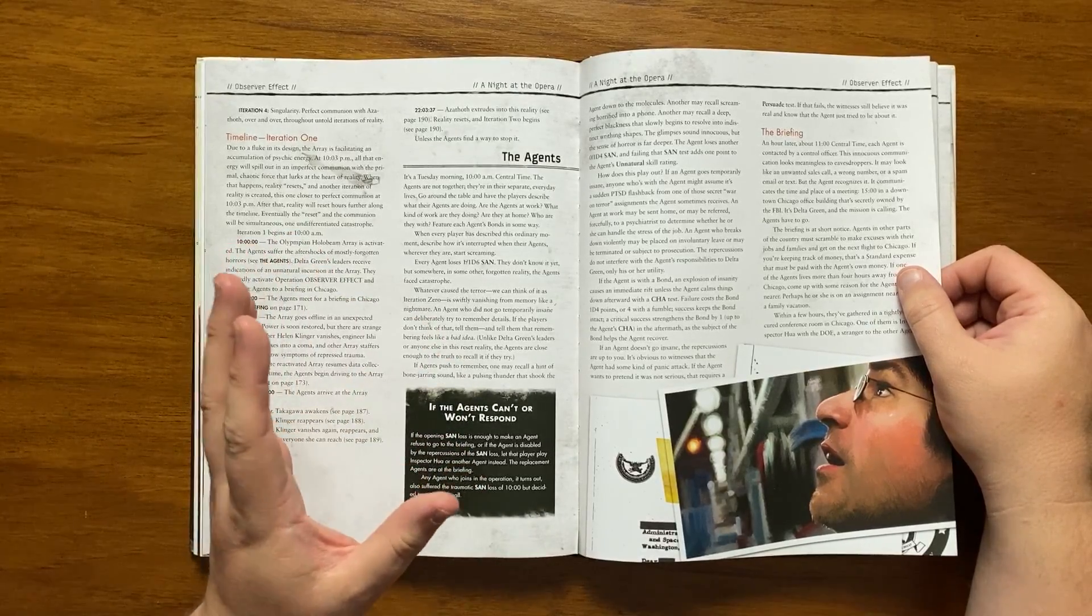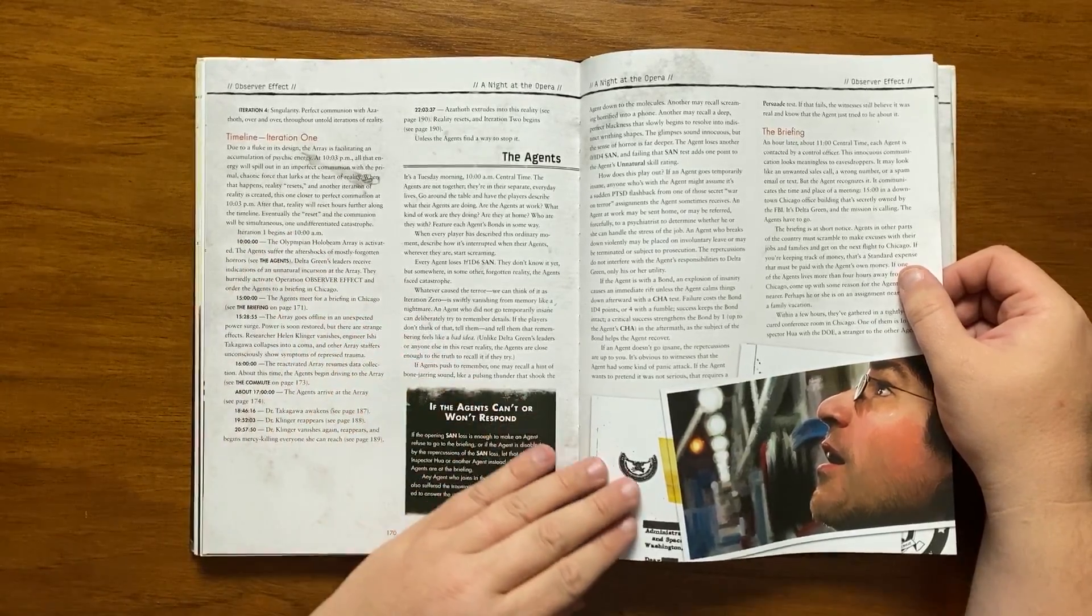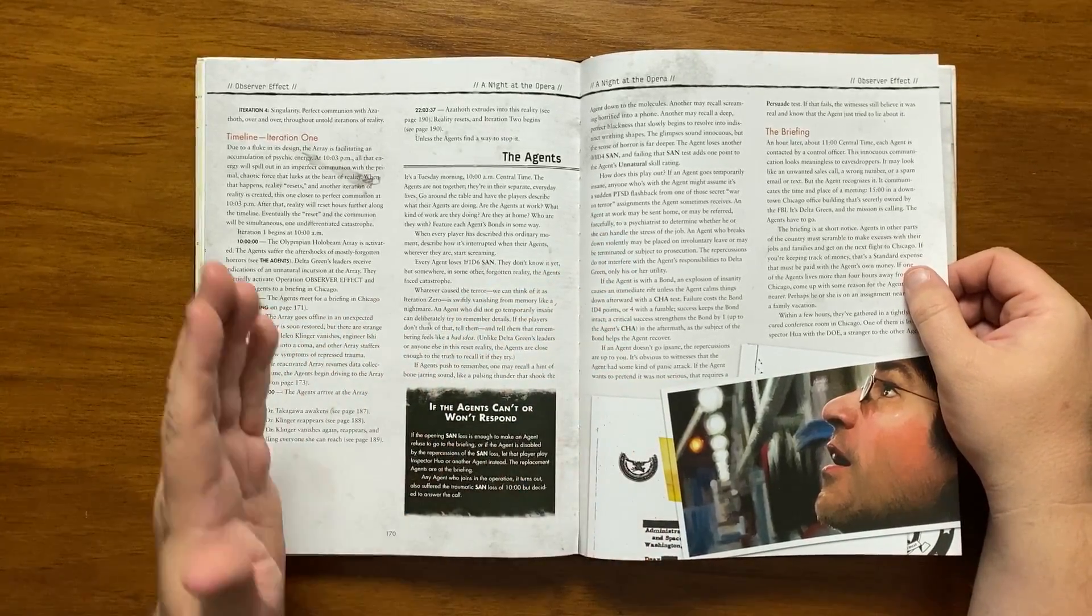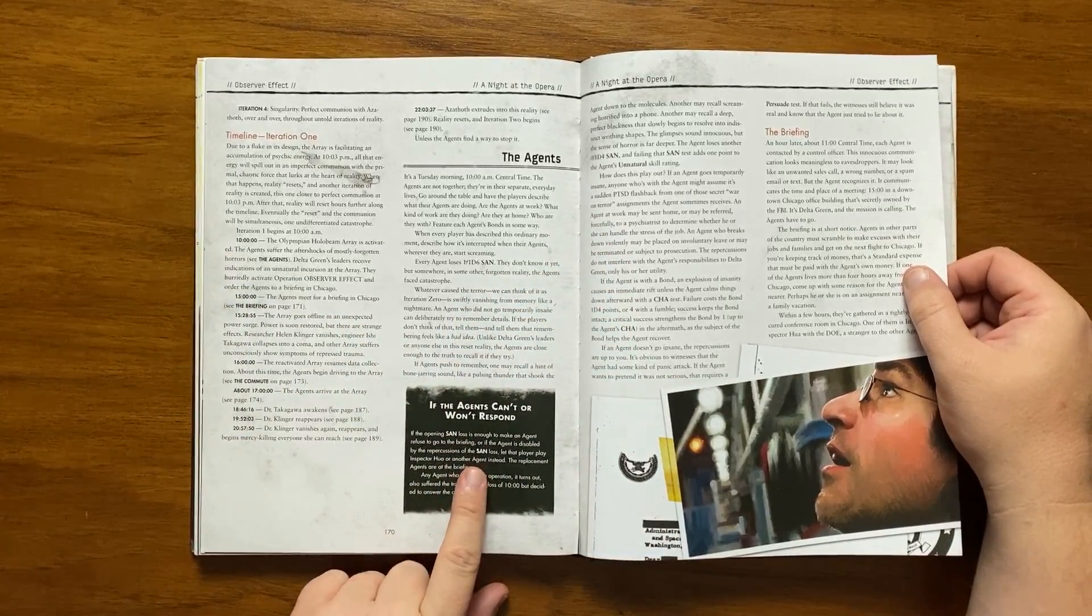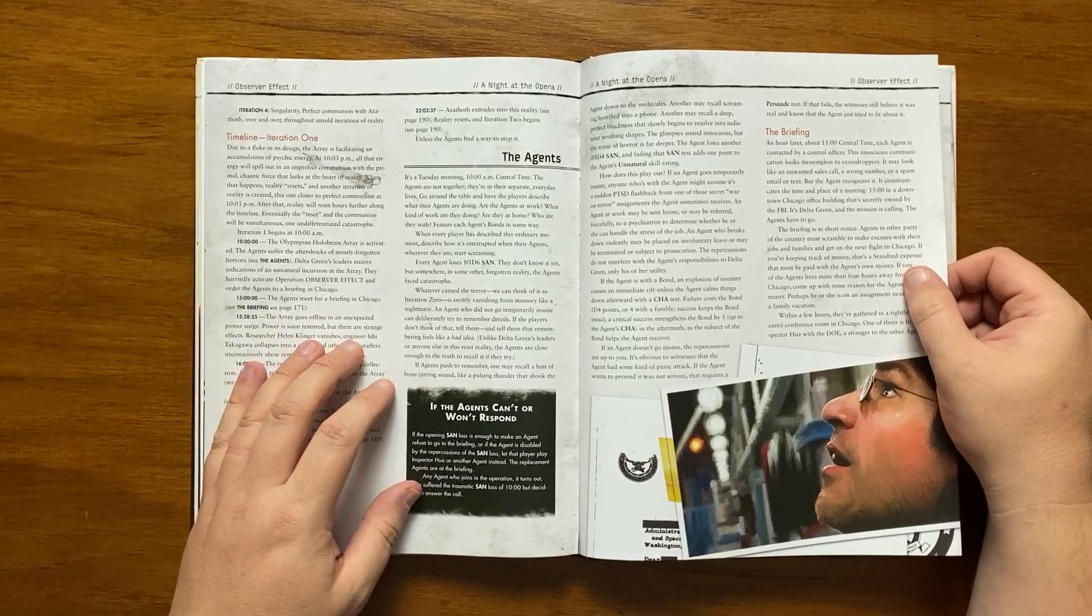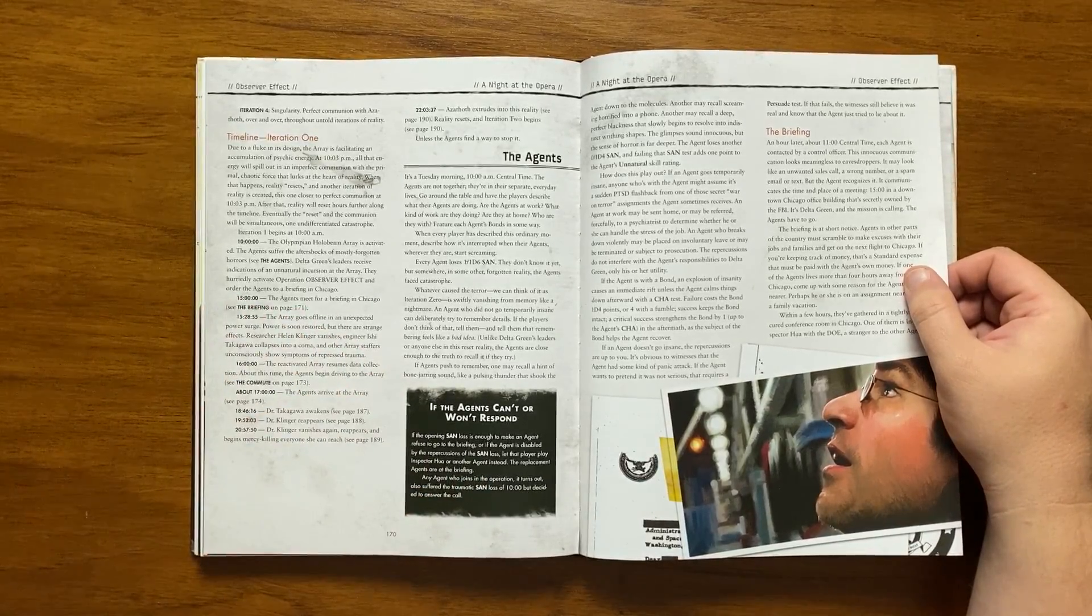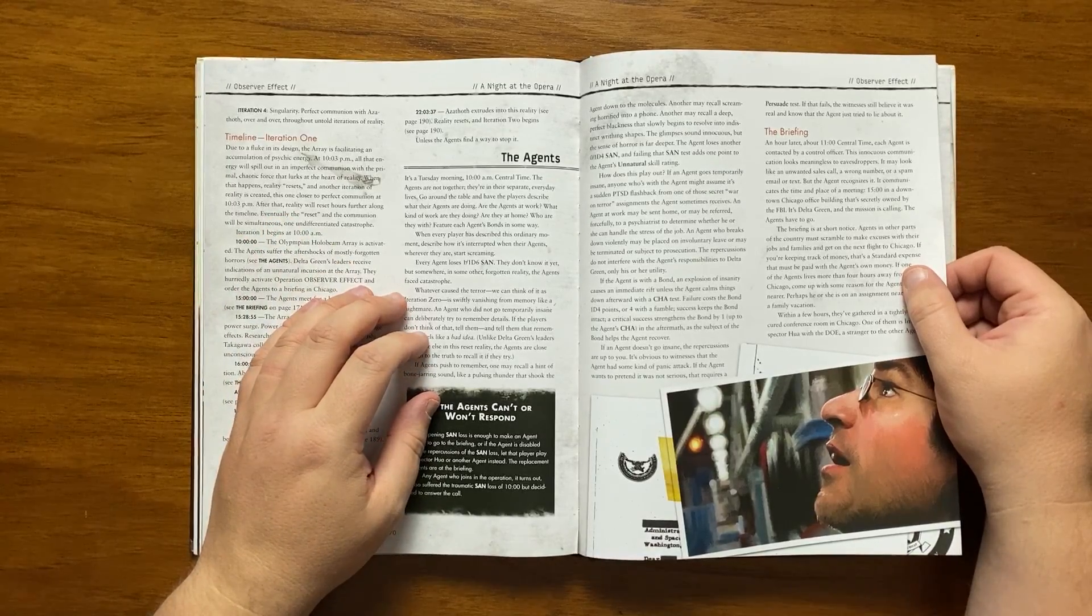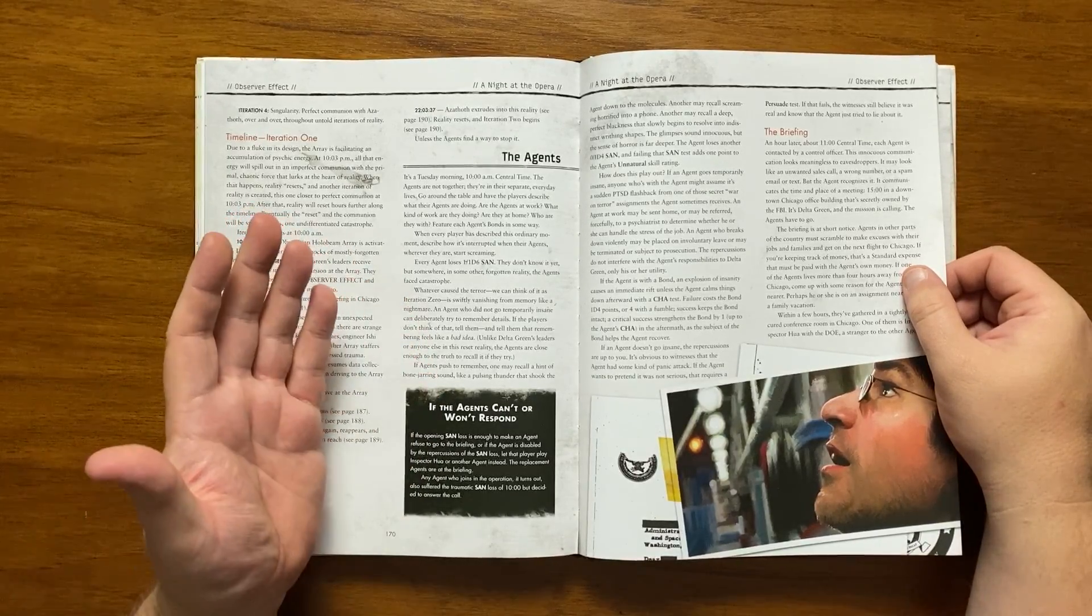Temporary insanity caused by this may be put down to PTSD. It gives a selection of what-ifs here, and this also has a negative effect on any bonds that they may be with. It also addresses the fact that they may actually go insane. It then jumps to an hour later, and the agents being briefed. They're contacted in an altogether innocuous manner to those listening, but are required to meet 1,500 hours in downtown Chicago in an FBI building.